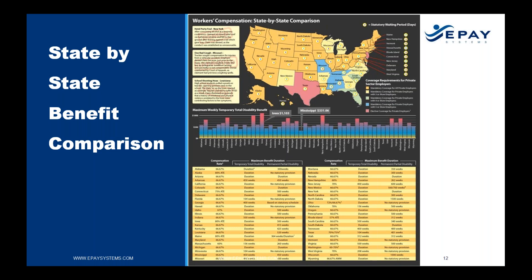We see Alaska among the highest-compensating states. Some states drop below 66⅓%, like Massachusetts, which goes down to 60%. For the most part, all states offer weekly benefits to the injured worker between a rate of 60 and 80 percent of their pre-injury average weekly wage.